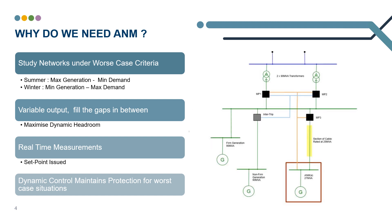This schematic diagram shows a relatively simple example where we have two 90 MVA transformers feeding a wider network. Worst case studies dictate that we can't go over 90 MVA firm capacity, as if we lost one transformer, the other one's going to be overloaded. Another 90 MVA of capacity could be connected under a non-firm arrangement using an intertrip scheme, as this is going to disconnect this 90 MVA in the event of a fault.